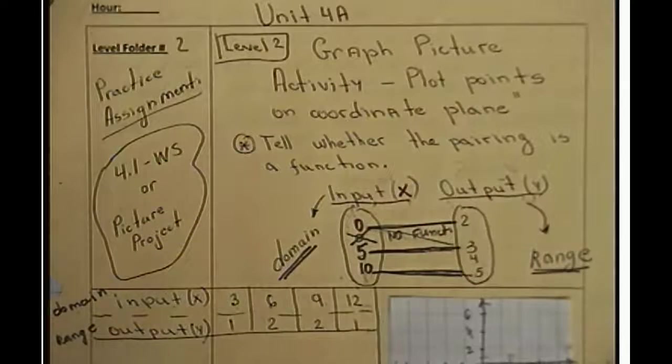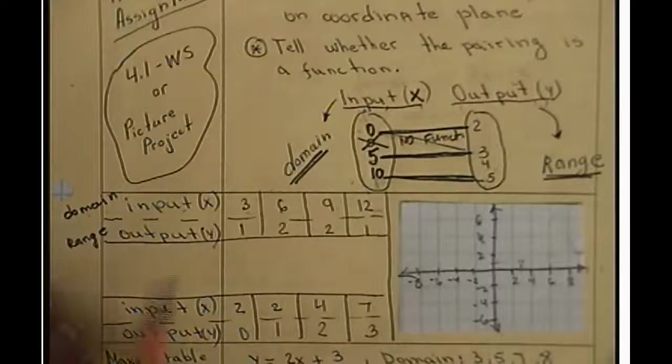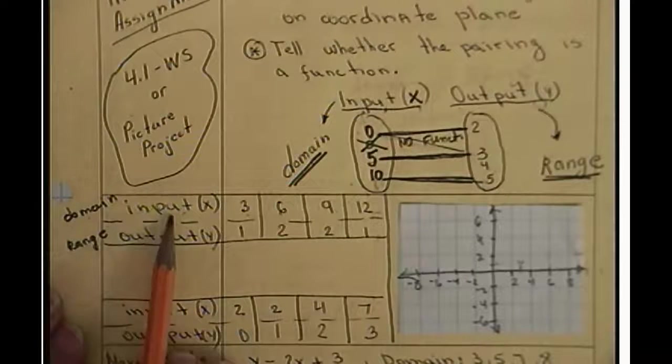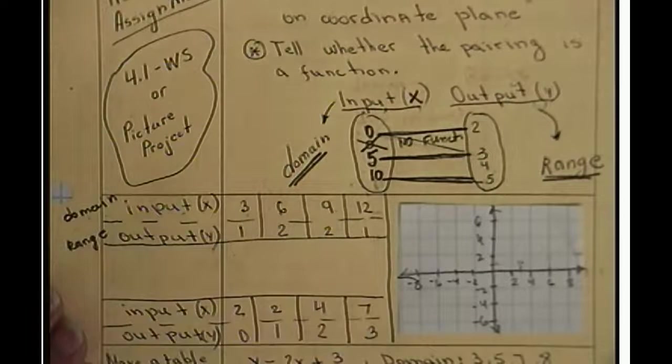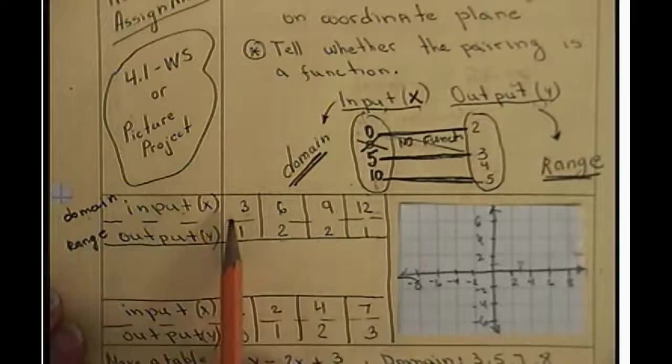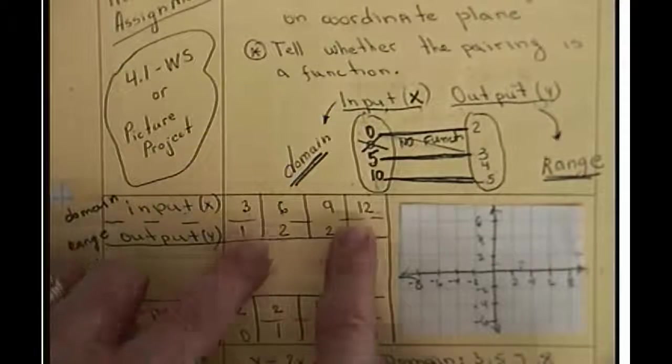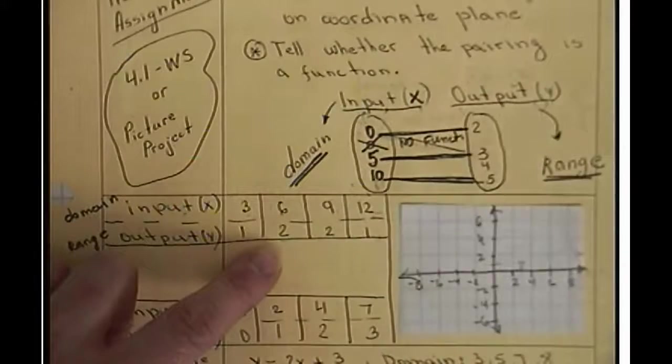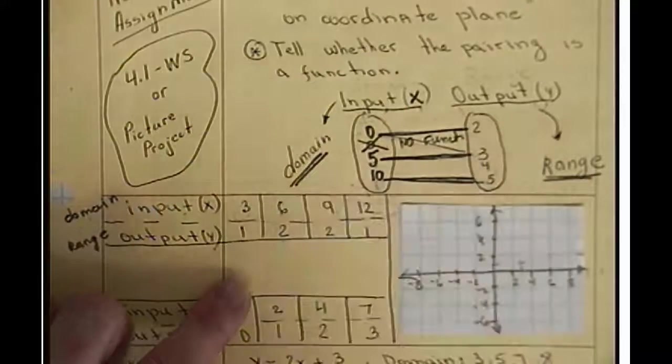That means if you look at those two tables, now look at the first one. We have input domain x with values 3, 6, 9, 12, and output with 1, 2, 2, 1. Now, x values are all different numbers. We are good here. Y values repeat, that's okay. That is perfectly fine. The goal is x values to not repeat. So yes, this is a function.